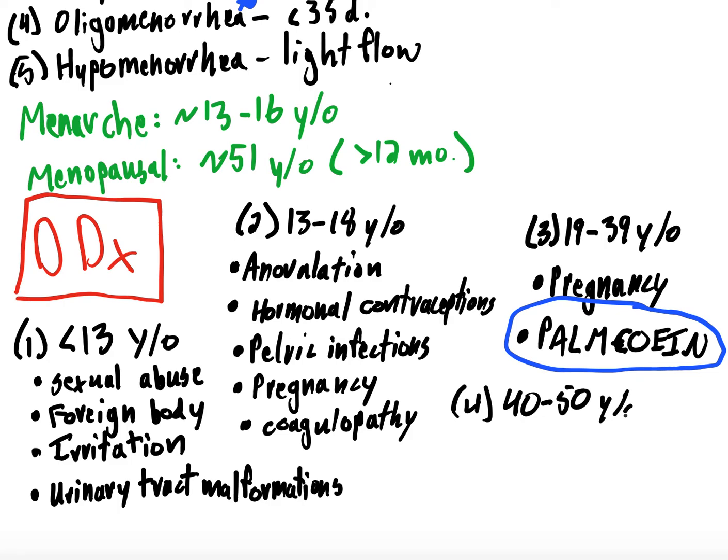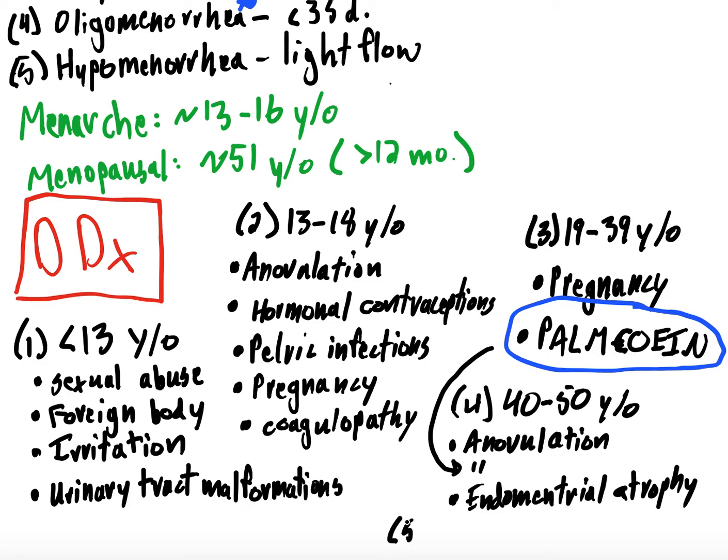So 40 to 50 year olds start to, you know, think about anovulation. Again, these patients are getting close to menopause and might be going through anovulation. You also worry about palm, Cohen. So I'm just going to put that down here. And again, we'll talk about that more in a minute. But in this, you start to worry about endometrial atrophy, right, as they're moving towards menopause.